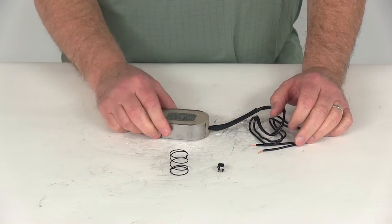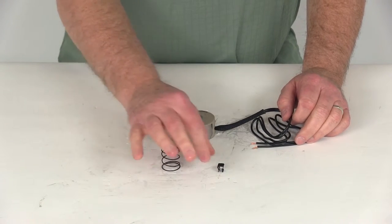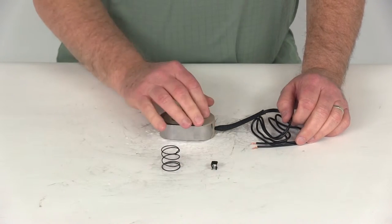This part includes everything shown here on the table: the magnet itself, the spring, and the clip which is used to attach the magnet to the brake assembly.